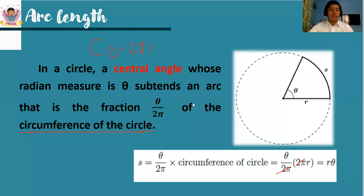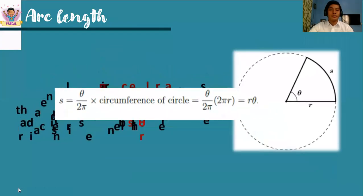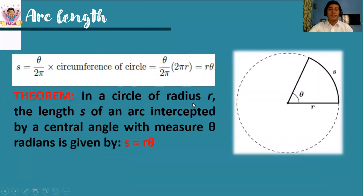So in theory, in a circle of radius r, if you are looking for the arc length s which is intercepted by a central angle, remember that angle theta must be in radians. The formula is s is equal to r times theta, or the arc length is equal to the radius times theta in radian measure.